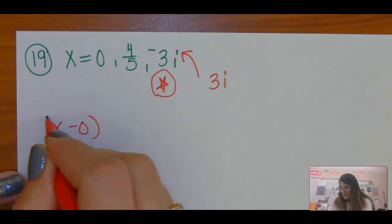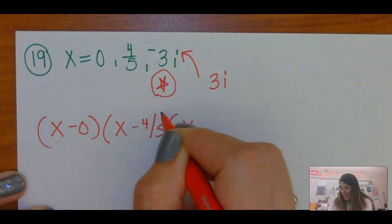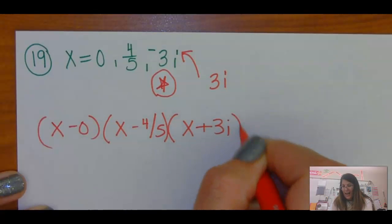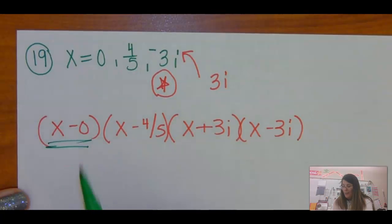So you have x minus 0, x minus 4 fifths, x plus 3i, and x minus 3i. First, we don't typically write x minus 0, we put the x here.